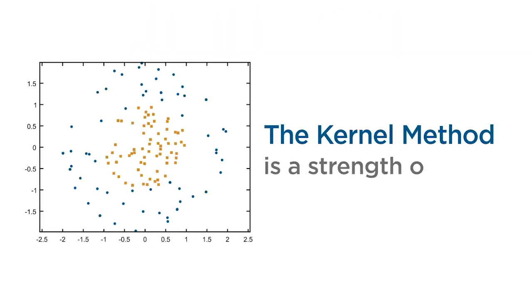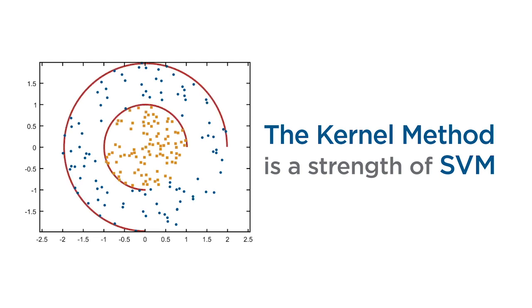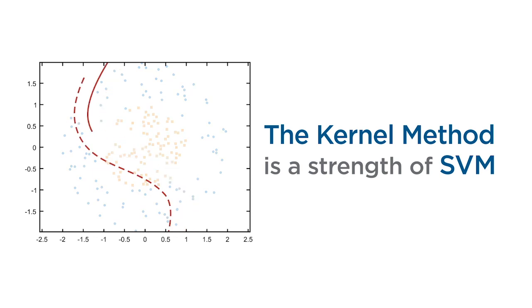The kernel method is a real strength of SVM, as it enables you to handle non-linear data efficiently. However, the kernel function must be properly chosen to avoid increasing the training speed drastically.